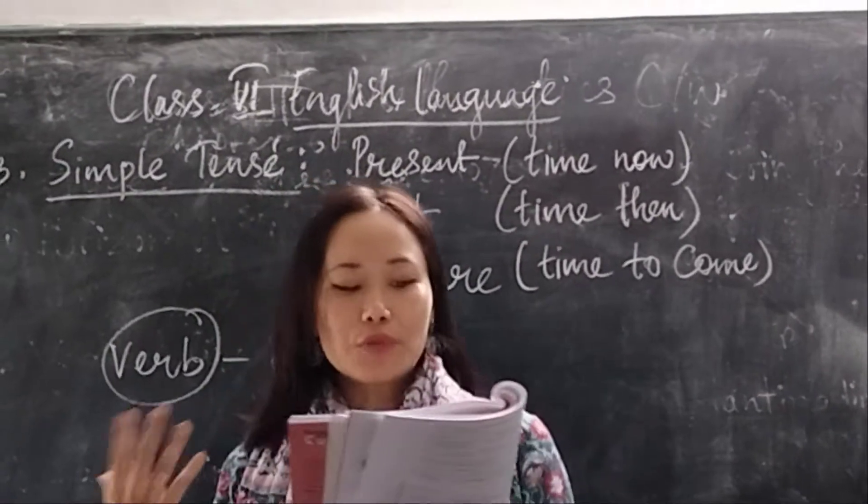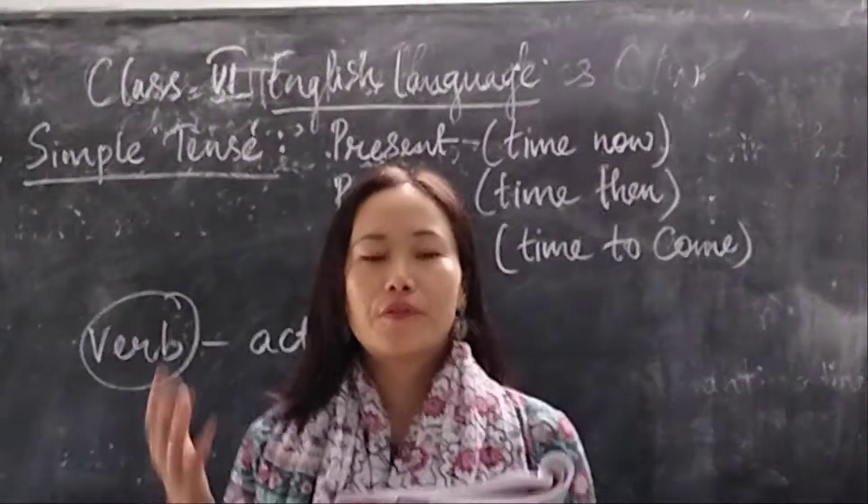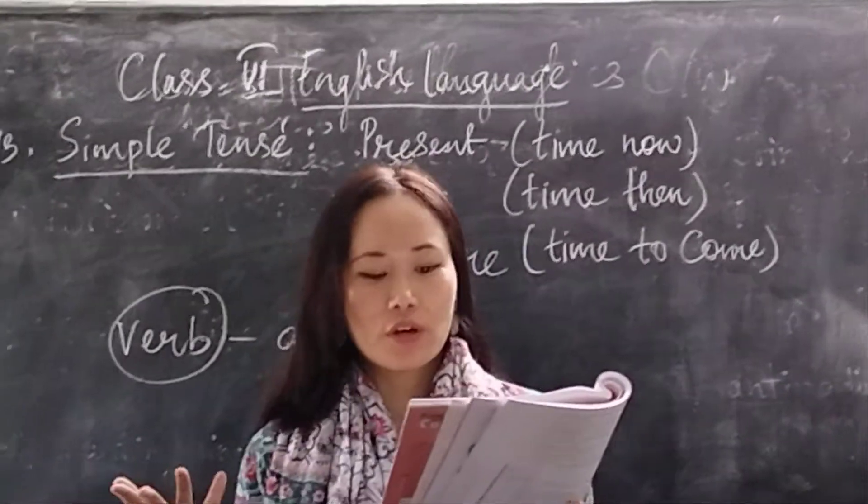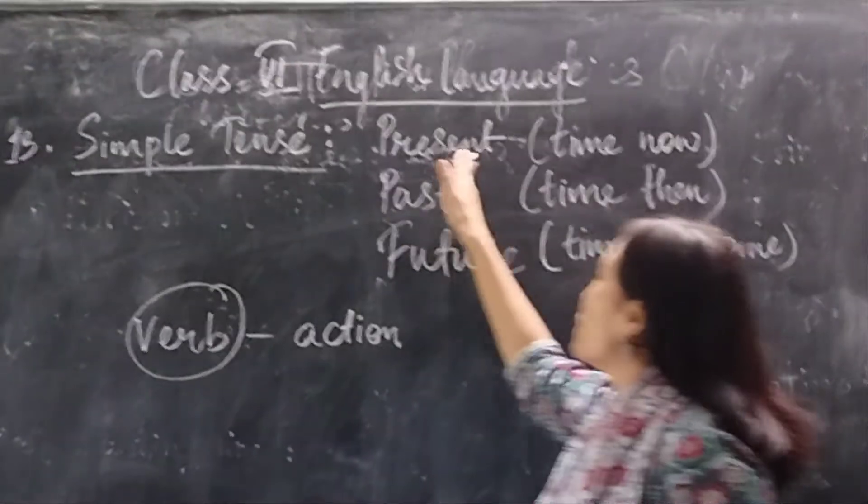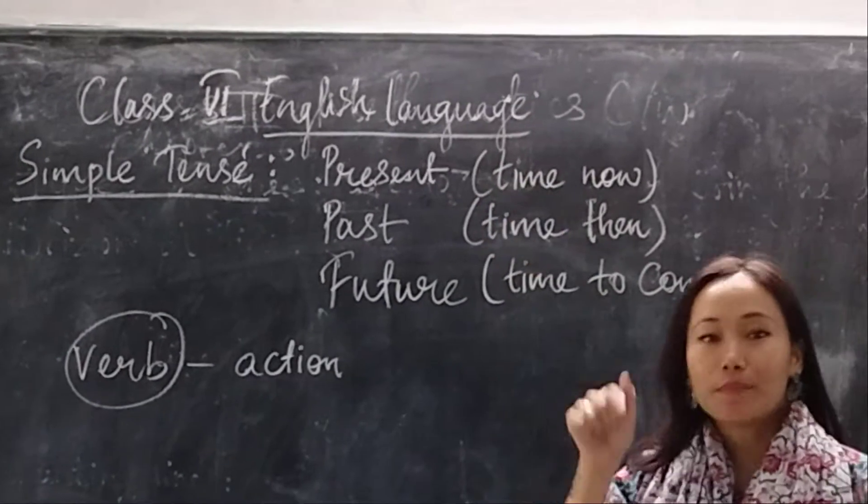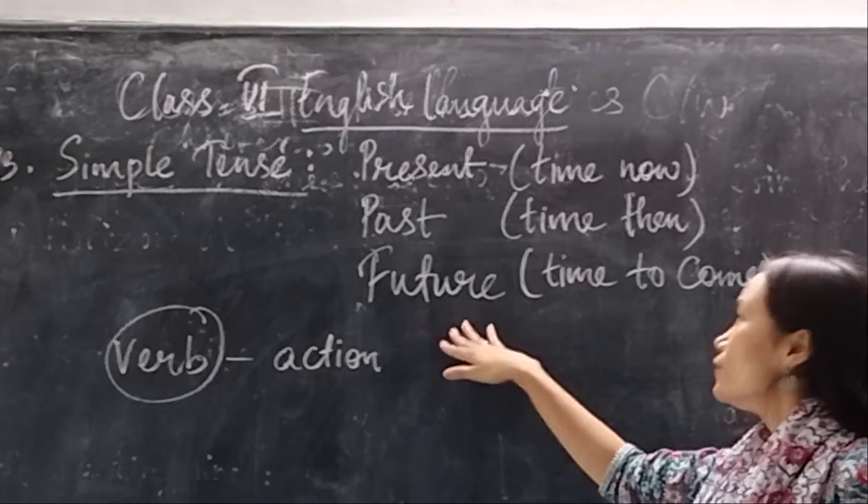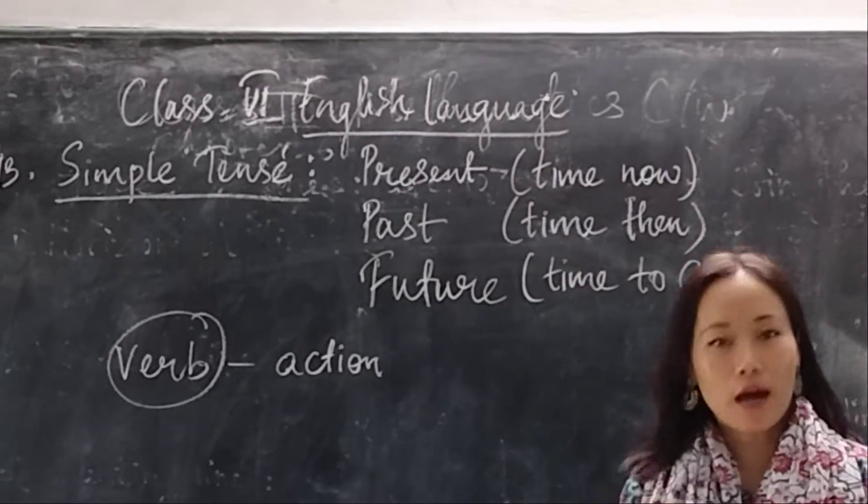Now, the three main conditions of time are present, past and future. Present means time now, past means time then, and future means time to come.